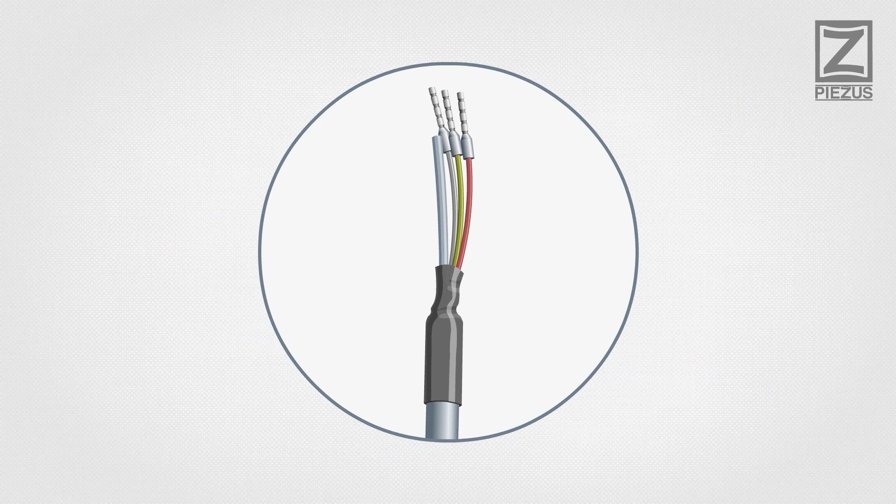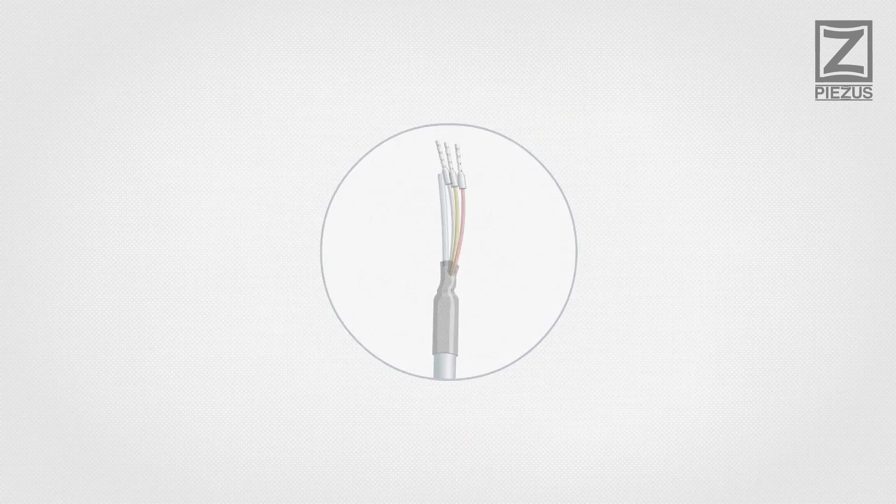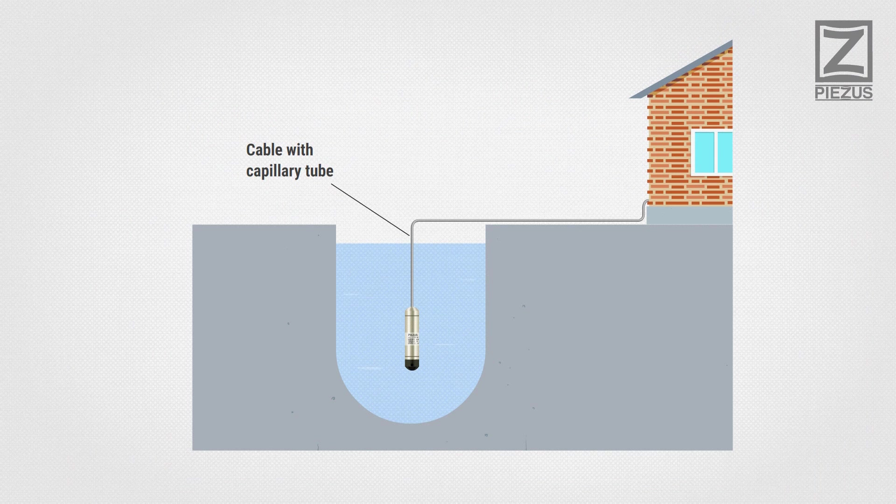Prevent the capillary tube from clogging by placing the cable end in a dry room or by using a termination box with an air filter.